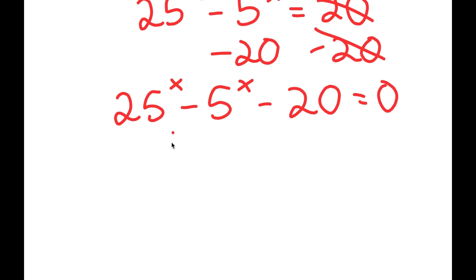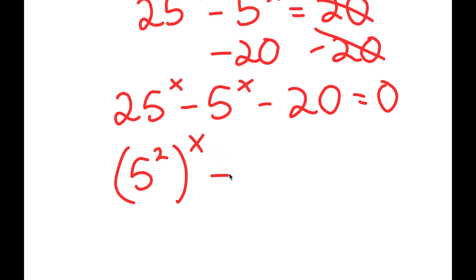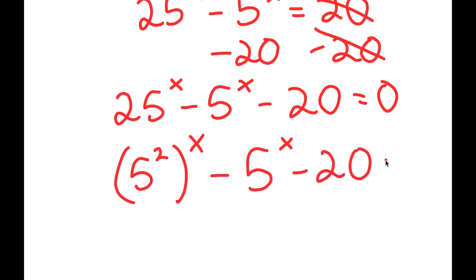Now, 25 to the power of x — I can rewrite this as 5 squared to the power of x. So I have this minus 5 to the power of x minus 20 is equal to 0.